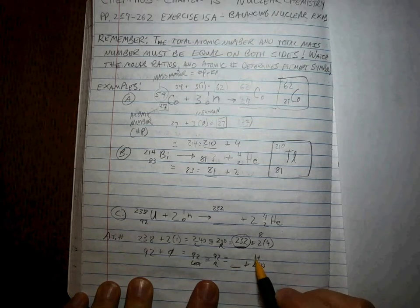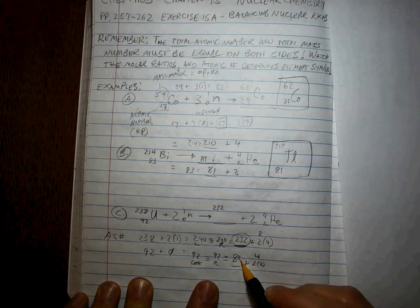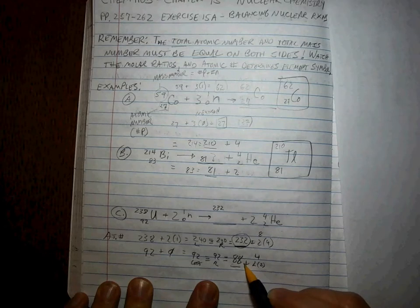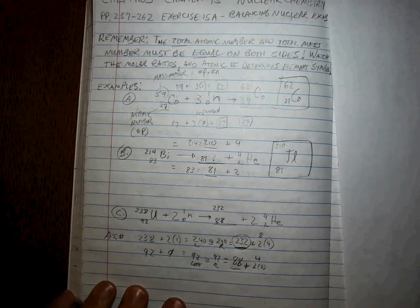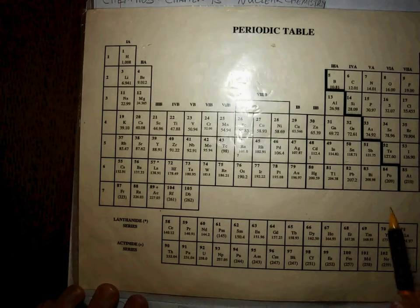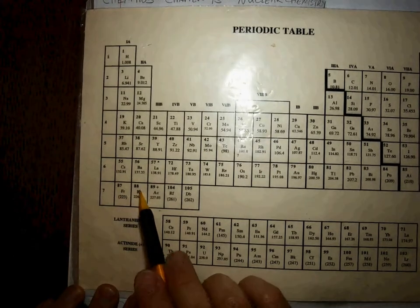That's 88. 88, 89, 90, 91, 92. 88 goes here, which means 88 goes here. You have to look at what element number 88 is. 86, 87, 88. That's Ra (radium).